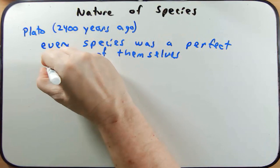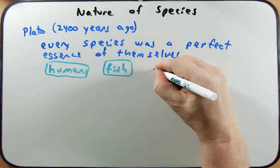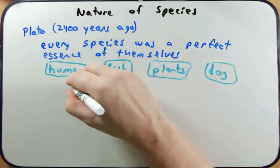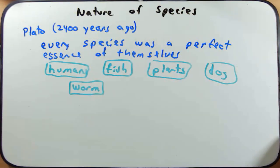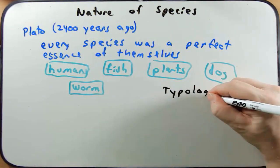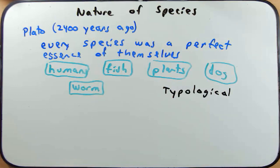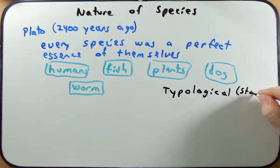He would put humans in a box all to themselves, fish, plants, a dog, and maybe an invertebrate like a worm. He would have argued that all of these different organisms existed perfectly as themselves with no change — they never changed. This kind of thinking was called typological, because every species was its own type. It was static — no change.